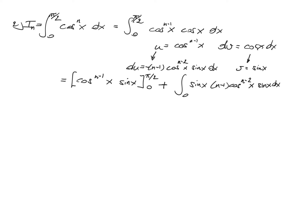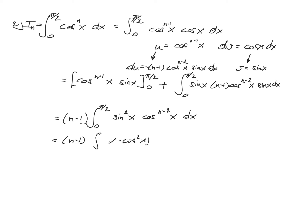Applying partial integration between 0 and pi over 2: the first term is cosine to the power n minus 1 of x times sine x evaluated from 0 to pi over 2. Since sine of 0 is 0 and cosine of pi over 2 is 0, this term drops out and equals zero. We are left with n minus 1 times the integral from 0 to pi over 2 of sine squared x times cosine to the power n minus 2 of x dx. Replacing sine squared x with 1 minus cosine squared x gives n minus 1 times the integral of cosine to the power n minus 2 of x minus cosine to the power n of x dx.